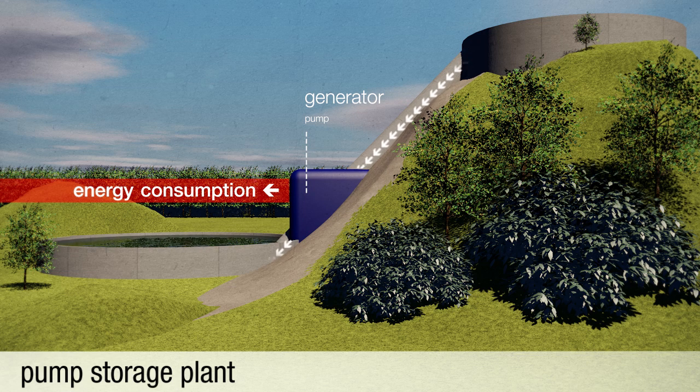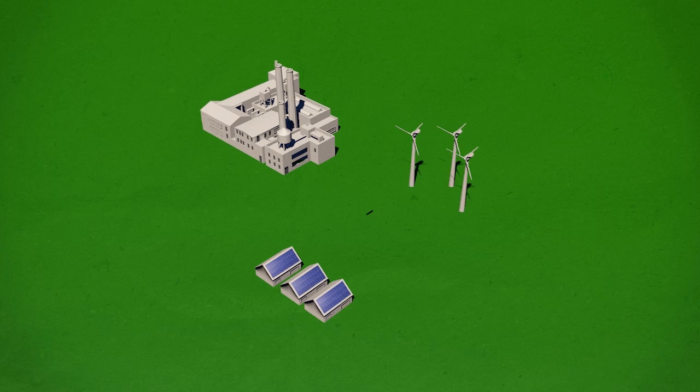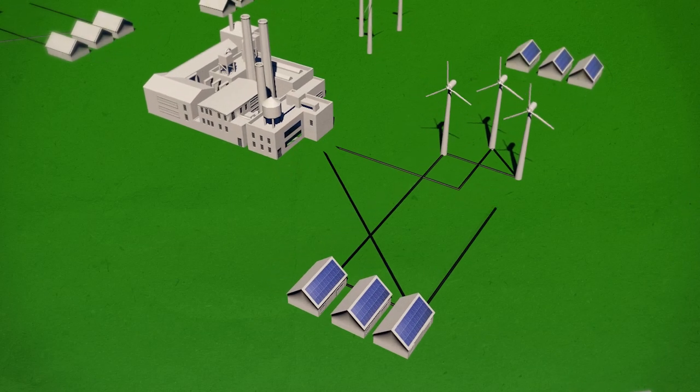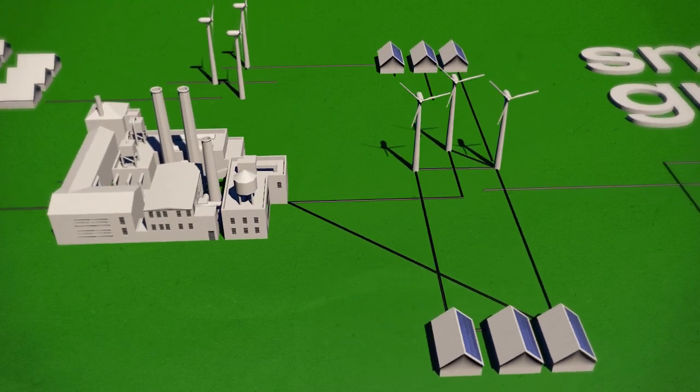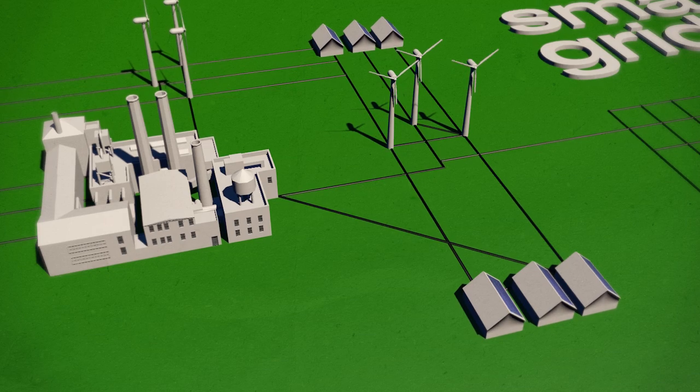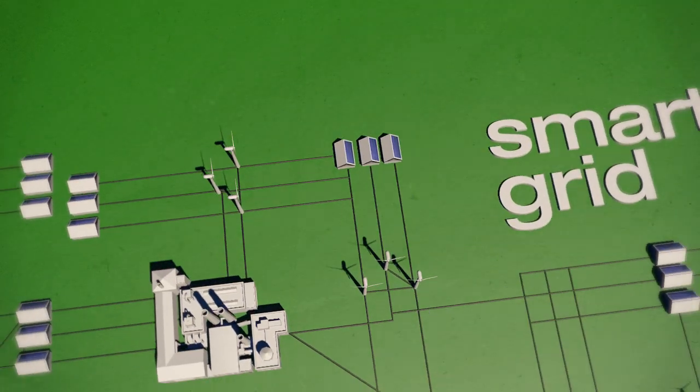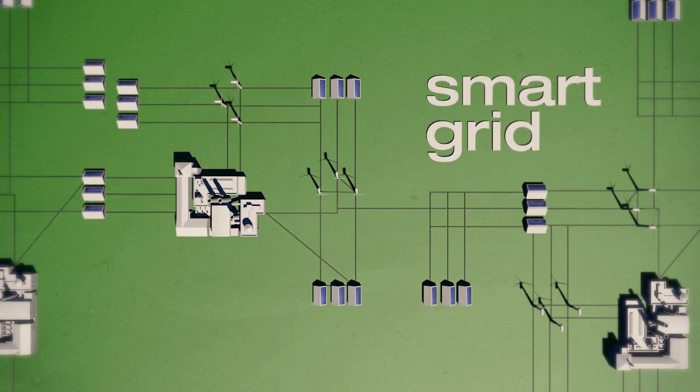A technical solution might be so-called smart grids. These intelligent power grids observe and link production, storage, and consumption of energy in a large integrated system. Depending on the demand for energy at a certain time, they can fine-tune energy production and moderate consumption. They balance fluctuations between energy supply and demand and integrate the many new decentralized producers into the power grid. Thus, the energy supply becomes more efficient and more reliable.